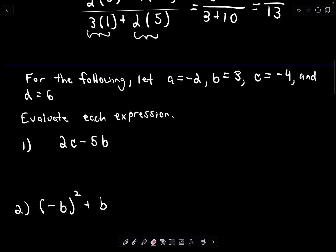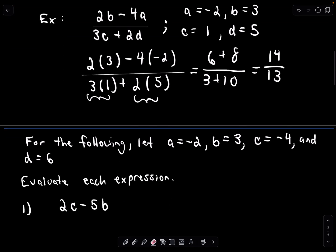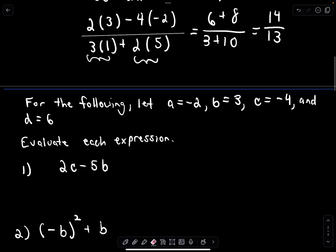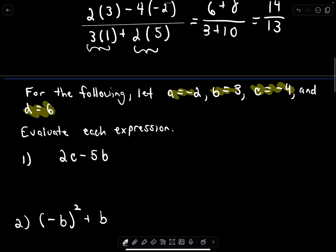Let's do a couple more. There's really not much more to it — I always say it's just plugging and chugging. I've got slightly changed values this time: a is negative 2, b is equal to 3, c is equal to negative 4, and d is equal to 6. We're going to evaluate all of these expressions.